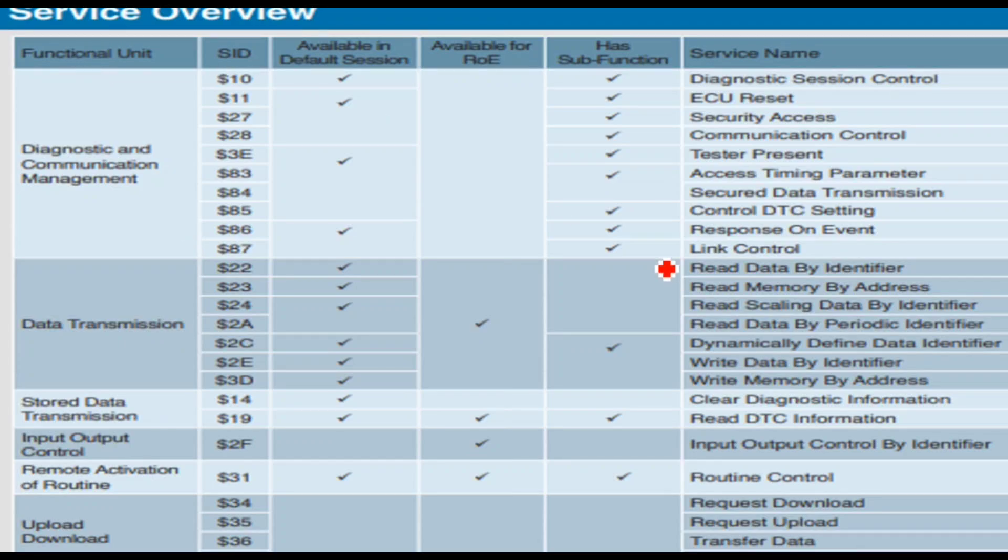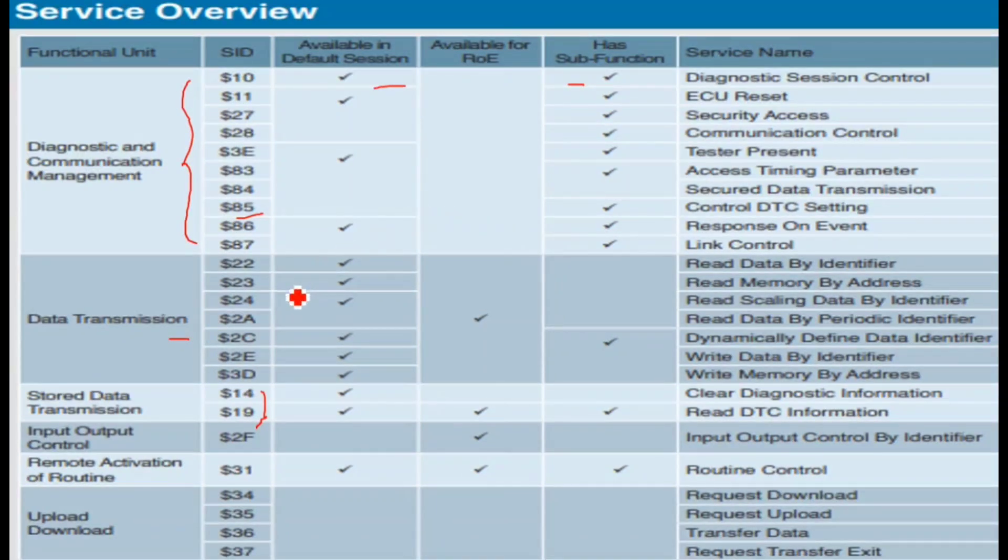I have attached this screenshot for your information purpose only, so you can take a screenshot. This shows the function unit - inside function units these service IDs are stored - data transmission, stored data transmission, their service name, the sessions on which they work, and their functions. Here we are working on 0x85, 0x14, and 0x19, which work in default sessions.